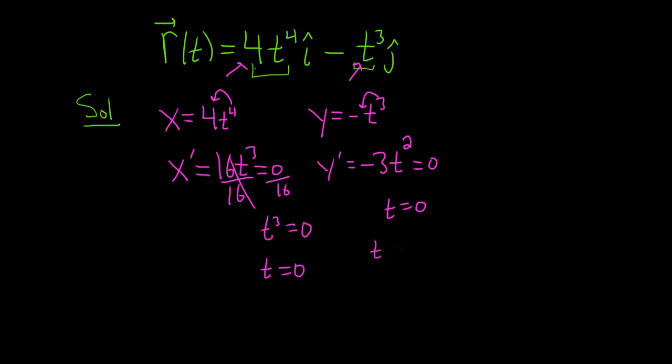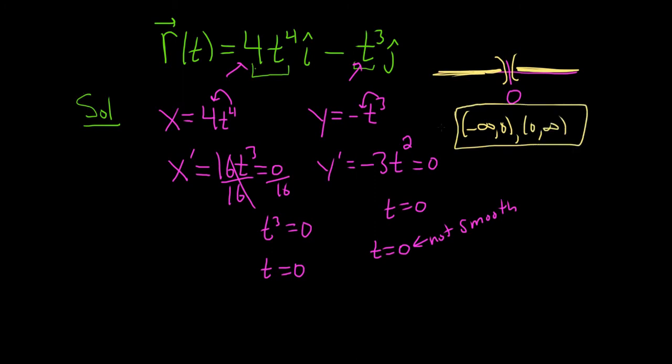So t equals zero is the number where it's not smooth. So it's smooth everywhere except zero. So if you put zero on a number line, we get all of this and all of this. So it would be negative infinity to zero, that would be one answer, and the other one would be zero to infinity. These would be the two intervals where the function is smooth.